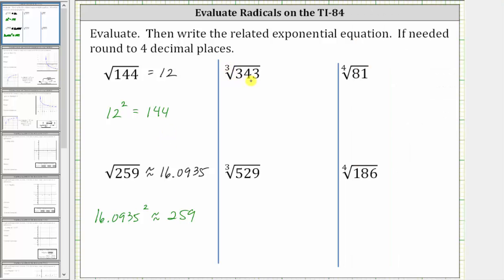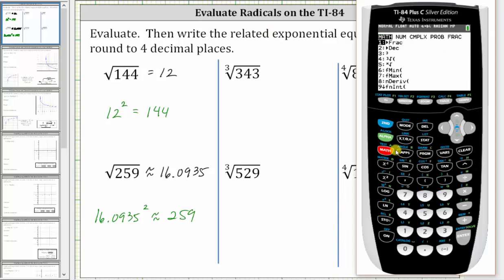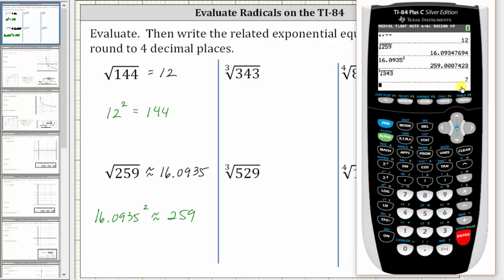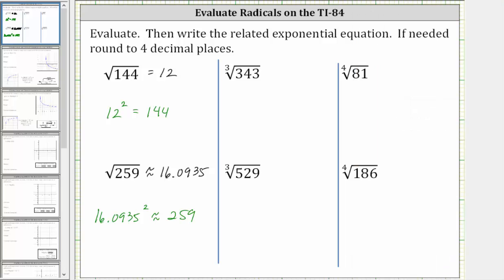Next we have the cube root of 343. We cannot access the cube root from the home screen — we need to press math, and then notice option four is the cube root because the index here is three. So we press four, enter the radicand of 343, press enter. The cube root of 343 is equal to seven, because if we take seven and raise it to the power of the index, which is three, we will get the radicand of 343.